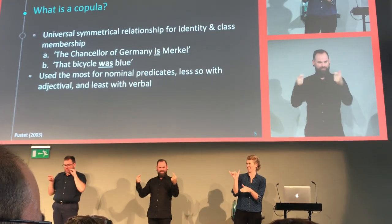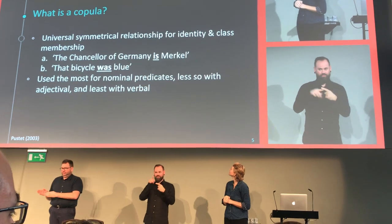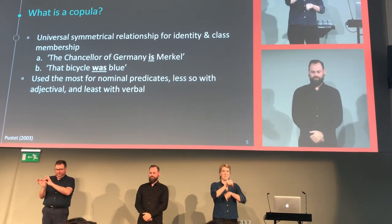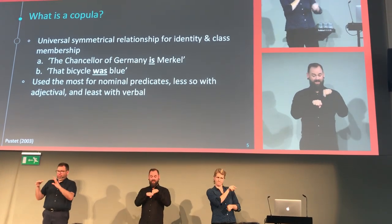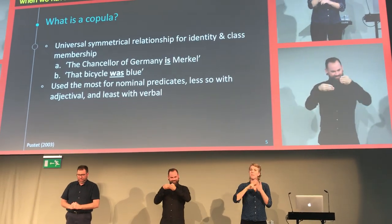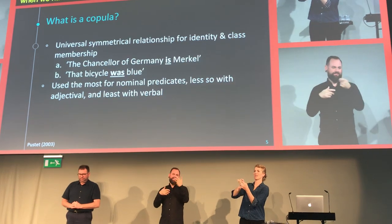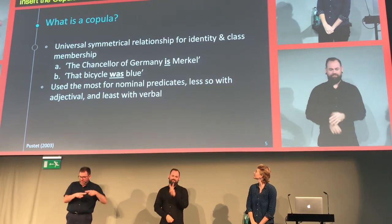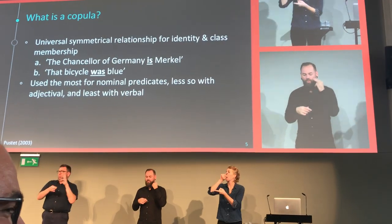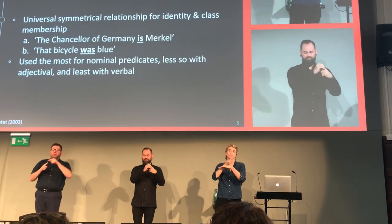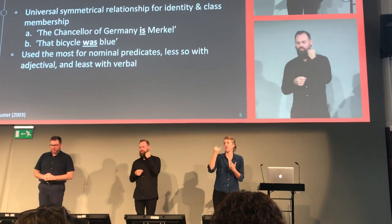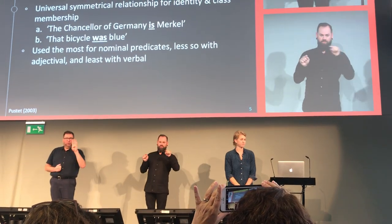You have to insert the copula to connect the two clauses. Let's look at example B: we have an entity, which is the bicycle, and when we have a class of membership of things that are blue, we insert the copula 'was' so that you can make a connection knowing that the bike belongs in that category of blue entities. These are used mostly with nouns, less so with adjectives, and the least with verbs — this is coming from spoken English. It is obligatory for nouns and adjectives, and it isn't necessary with verbs.